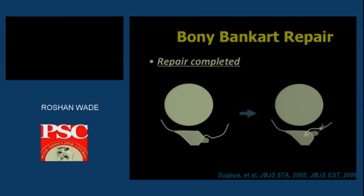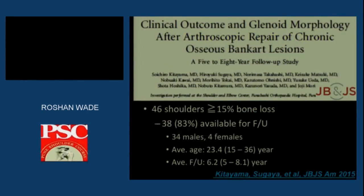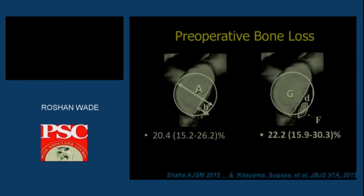This is the completed repair — pre-op and post-op — which adds stability to the glenoid and achieves good compression concavity cohesive forces. Clinical outcomes published by Kitayama and Sugaya found that when bone loss is less than 15%, good results are achieved. However, when the defect is between 15% to 26%, there is almost a 20% failure rate. Shaha published that 15% to 30% bone loss can be repaired with bony Bankart repair, but beyond that leads to recurrent instability.